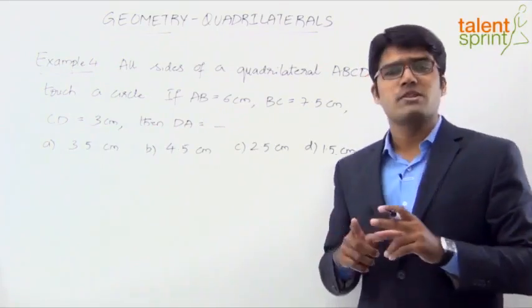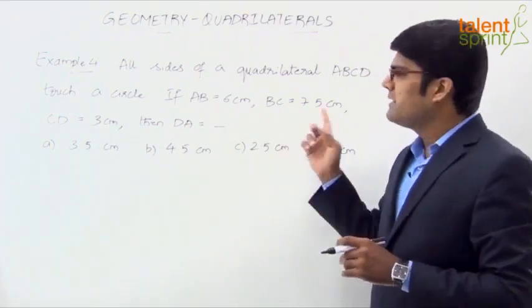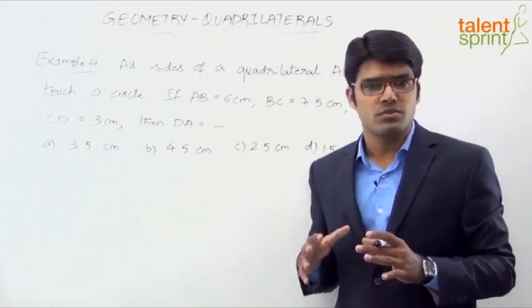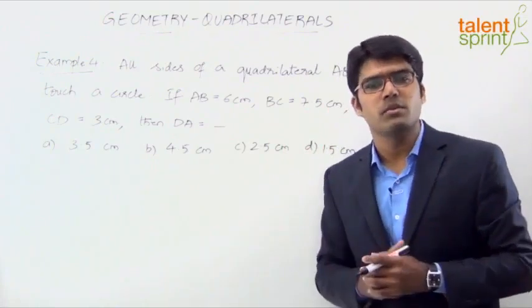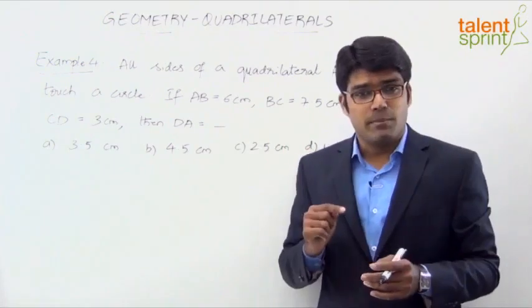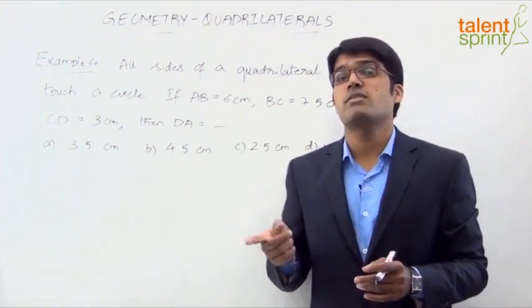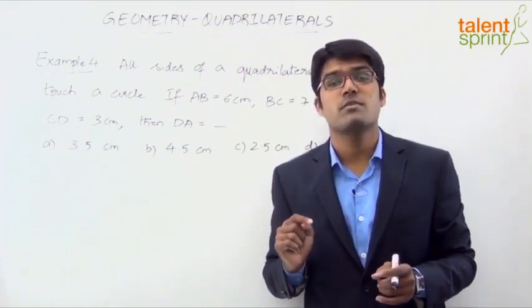It says all the sides of a quadrilateral touch a circle and three of the sides are given. We need to find out the fourth side, and this is based on a very simple point which I am going to explain now. See, in the previous example, example 3, we have learned about a cyclic quadrilateral.